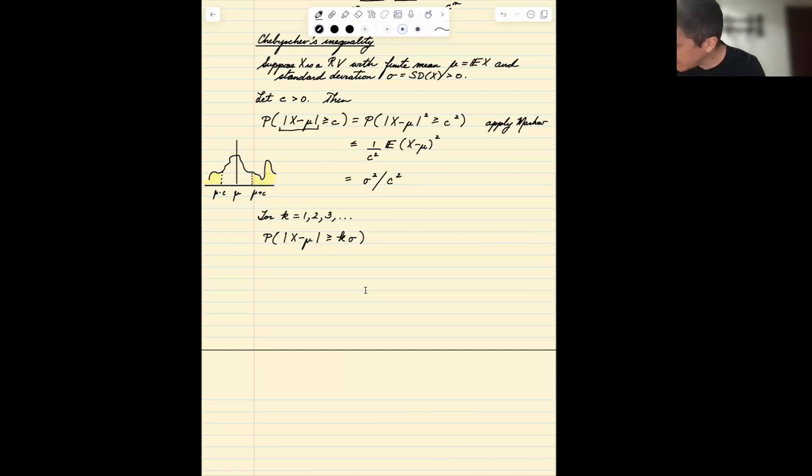Well, I can just apply Chebyshev's inequality. One over c squared, c is k times sigma. So it's one over k times sigma squared times sigma squared, which is the variance. The sigma squareds cancel and I get one over k squared.